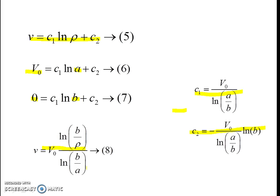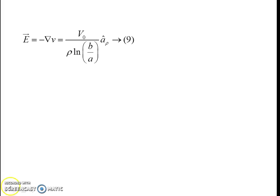We can also obtain the electric field from the expression for potential using the relation E = -gradient of V. Applying the gradient operation on V, we obtain the electric field as E = V0 / (rho * log(b/a)), pointing in the rho direction.